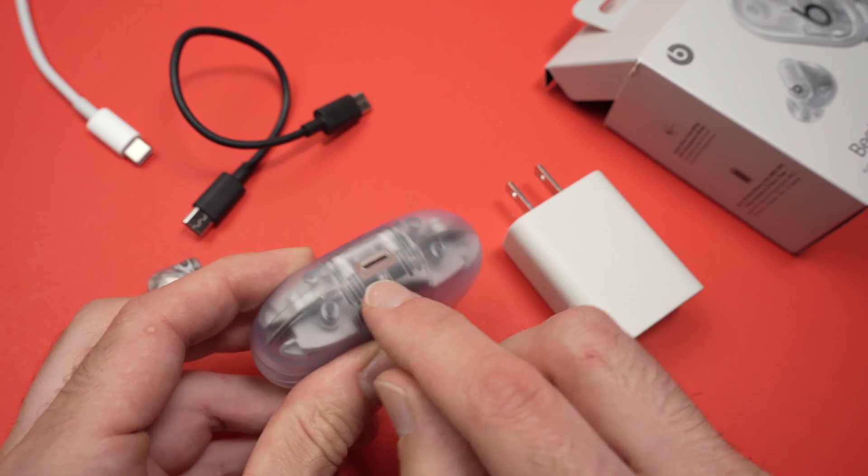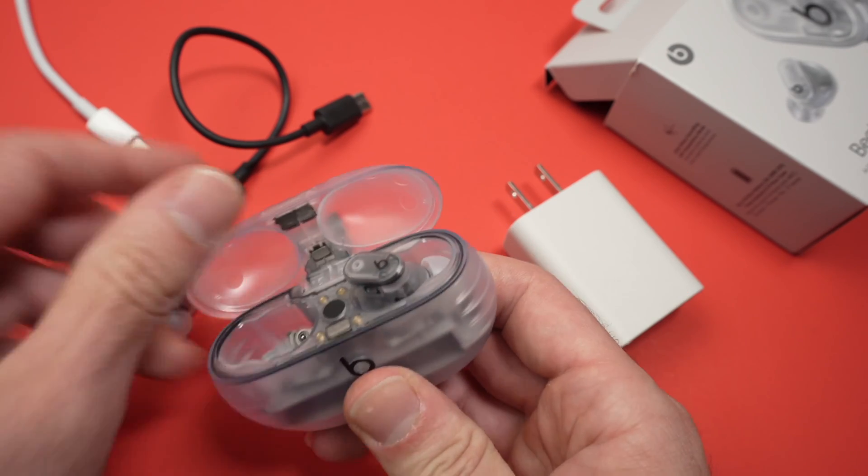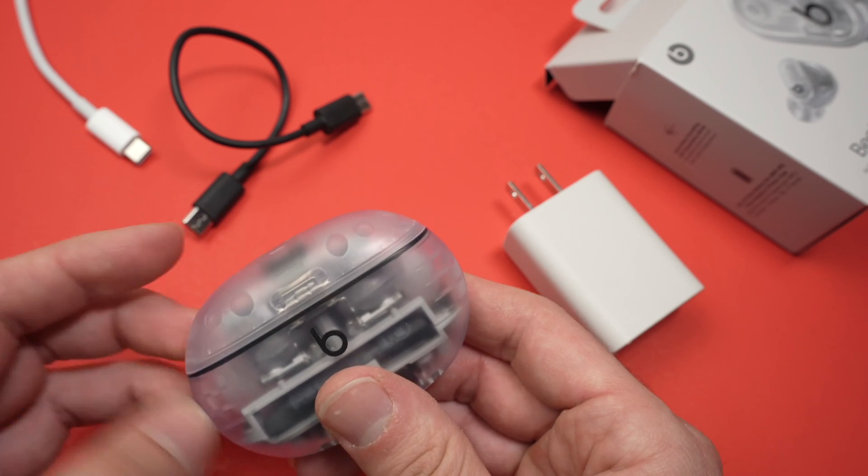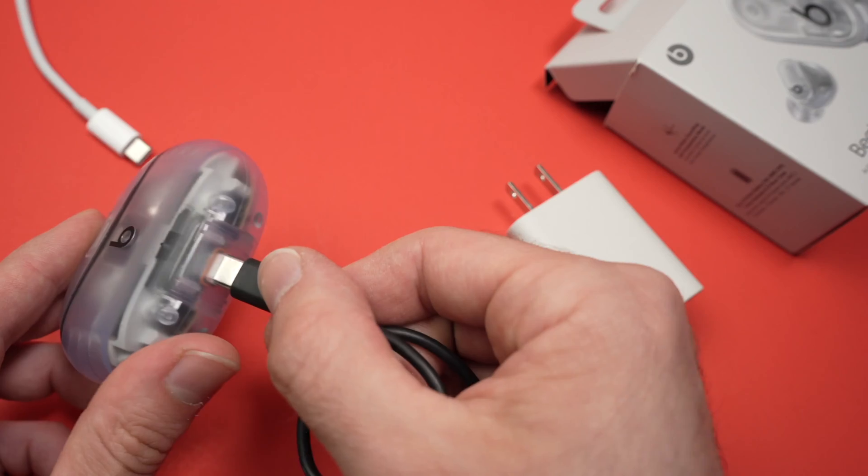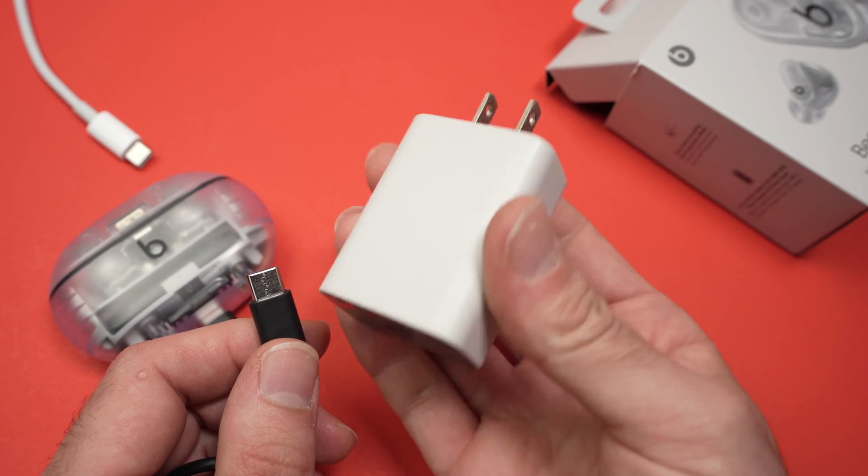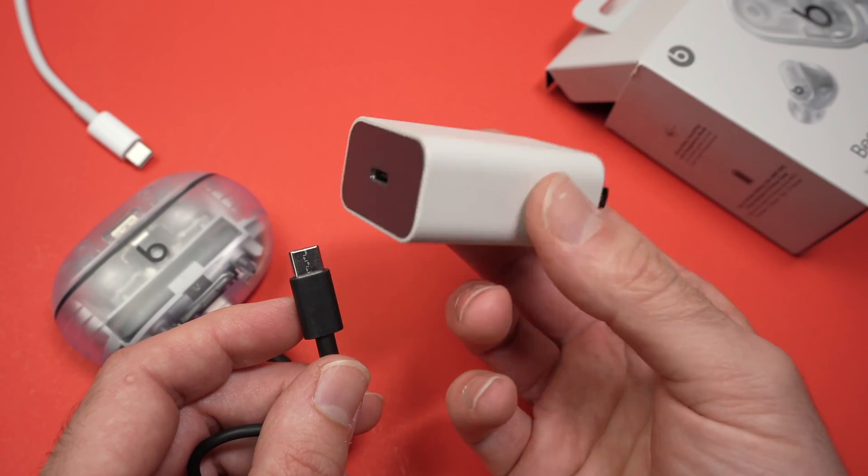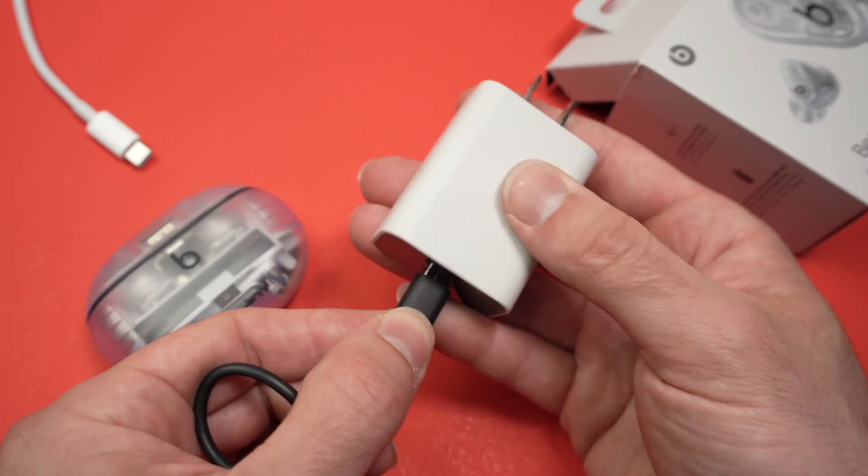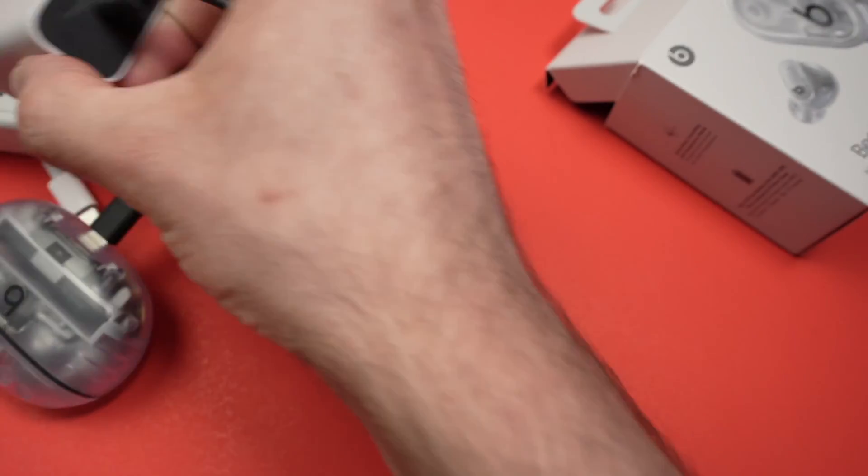You absolutely need to use the USB type C port that is located under the case. And to charge them, first of all make sure that they are inserted here and that they are properly inserted. If not, it won't work. Close the lid. And now you have multiple choices. You can use the cable that they came with, that is a USB type C to USB type C. In this case, you'll need a USB type C charger like the one I'm having right here. Connect this to this, and finally plug it into a power source.